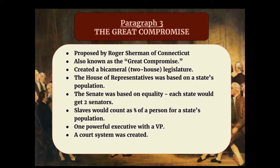They did decide on one single executive — we now know that as the president — but they also decided to create a vice president. So in a sense there are two executives, though really only one since the president holds the real power. And because both plans agreed to create a court system, that was included as well. If you have those things in your first three paragraphs, you're good. Remember, you also need to address an opinion at the end: do you think the Great Compromise was a good thing or a bad thing, and give one or two reasons why. Hopefully this helps you prepare.